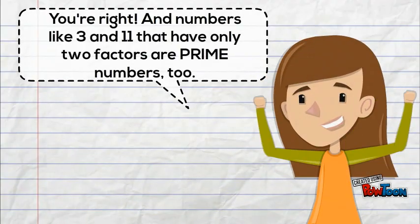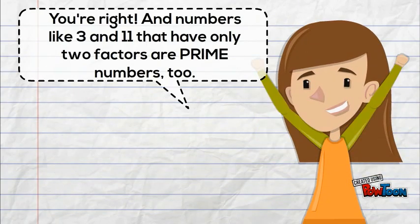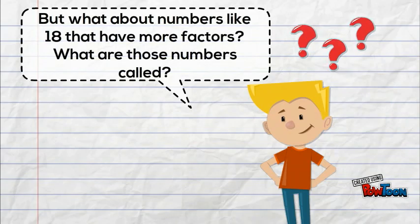You're right! And numbers like 3 and 11 that have only 2 factors are prime numbers too. But what about numbers like 18 that have more factors? What are those numbers called?